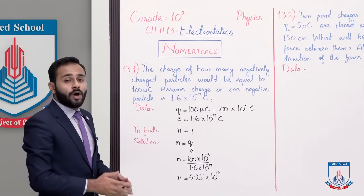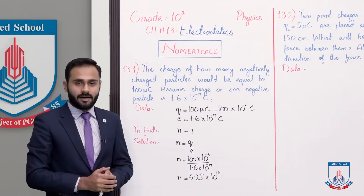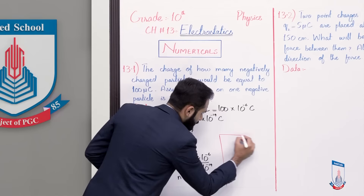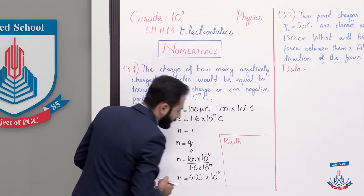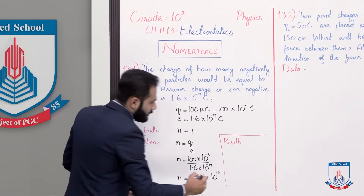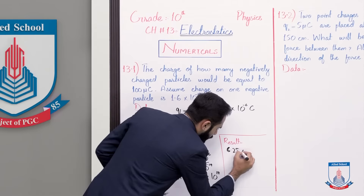So itnay number of electrons jo hain wo equal hongi 100 micro coulomb charge ke. So write the result. The result is 6.25 multiplied by 10 to the power 14.